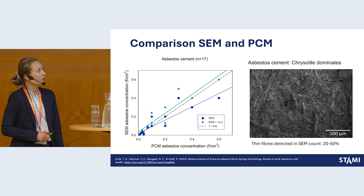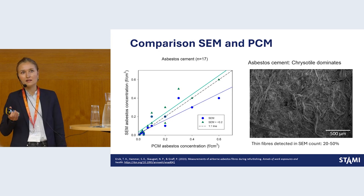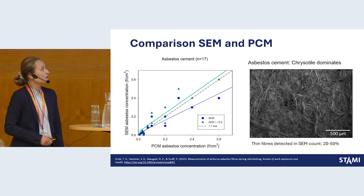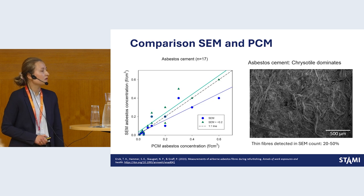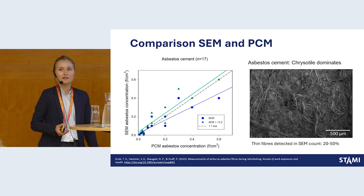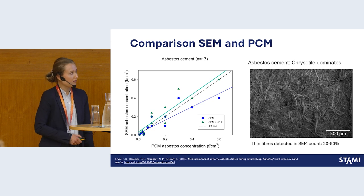For the outdoor materials, we quite often found other types of fibers present — both inorganic and organic fibers, also coming from natural sources. We think the PCM method probably counted these inorganic and organic fibers, leading to higher apparent concentrations. When adding thin fibers to the SEM count, we are closer to a one-to-one relationship, and the thin fibers actually accounted for almost 50 percent in some of these samples.